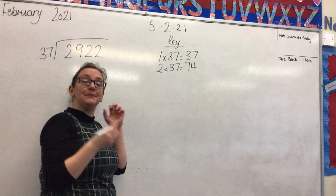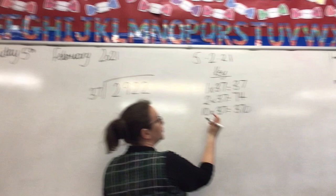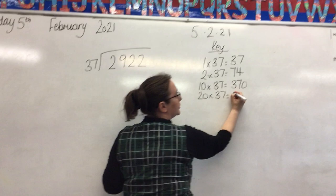Now you can play around with the numbers. This is why we were practicing multiplying by 10, 100, and 1,000 last week. We can do 10 times 37, which gives us 370. Then 20 times 37 - we're just making it 10 times bigger - so 740.